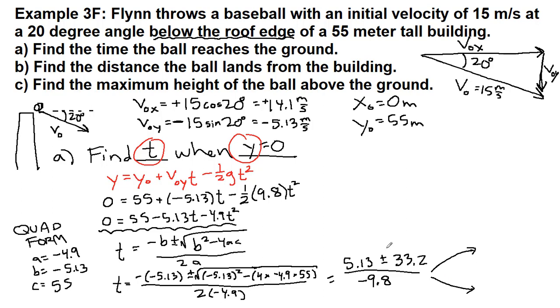Now we have two possibilities. If we add these two together up top and then divide by negative 9.8, we will get negative 3.9 seconds. If we take 5.13 minus 33.2 and divide by negative 9.8, we will get positive 2.87 seconds.